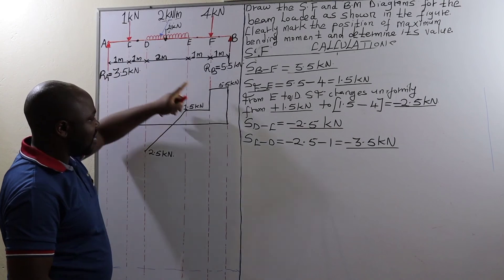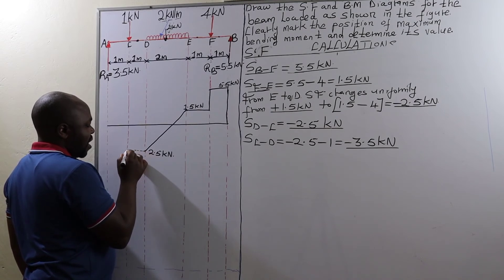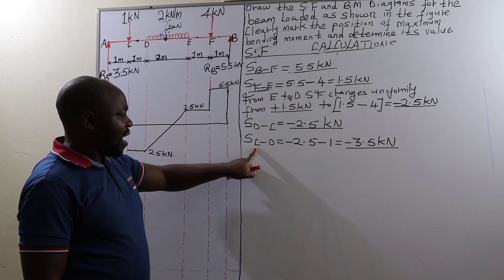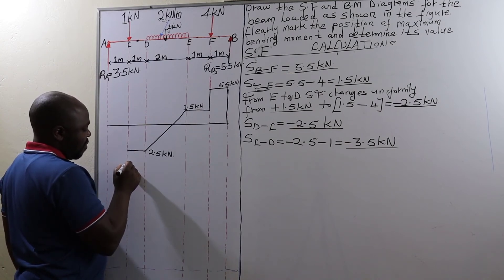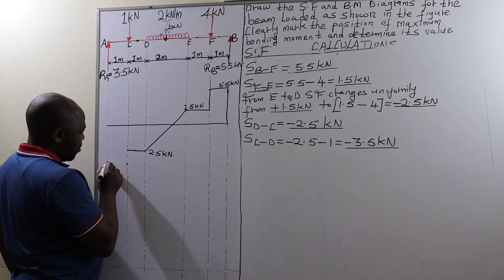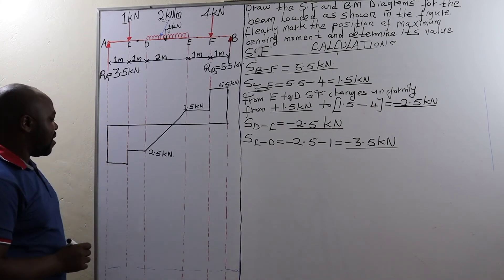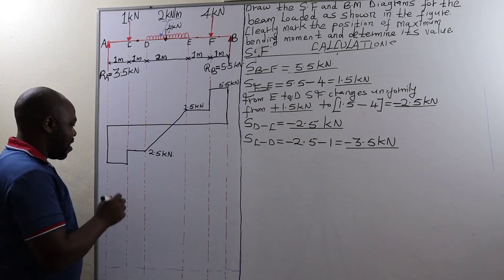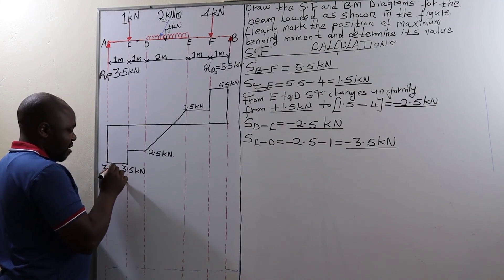We have the shear force between point D and point C, which is negative 2.5 kilonewtons. Since this is a 2.5 kilonewtons point, we join another 2.5 kilonewtons at point C. Finally, the shear force between C and A is negative 3.5 kilonewtons. Since this is 2.5, we drop one more unit down. At point A we have negative 3.5 units down, so we join those points. We complete the SFD by dropping that line from the origin all the way to 3.5 kilonewtons at point A.